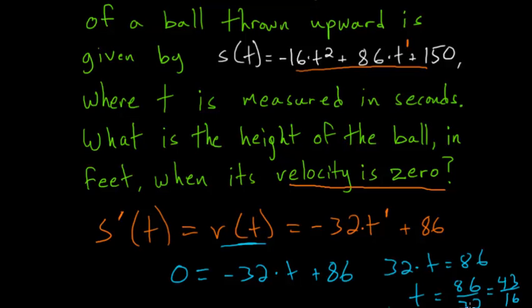We've figured out the time when the velocity becomes 0, but we need to know what the height of the ball is at this time. To figure that out, we'll just have to plug our value for t into this position function that gives the height at any given time.